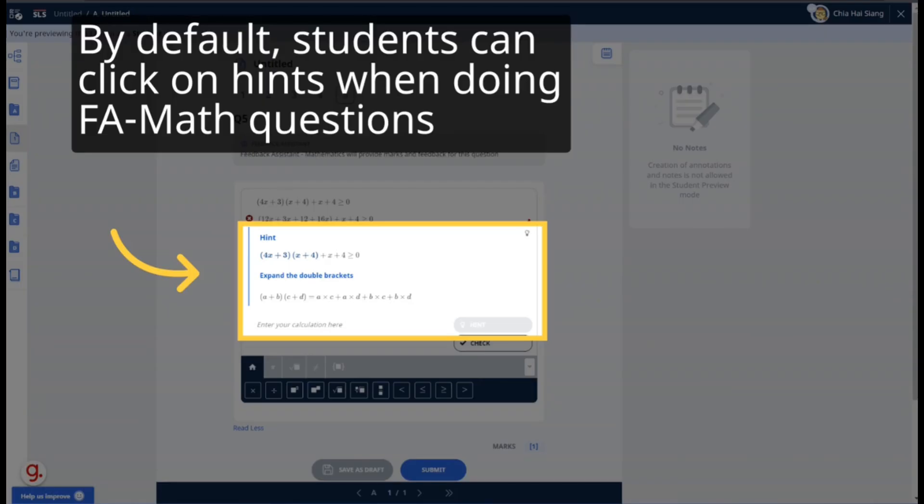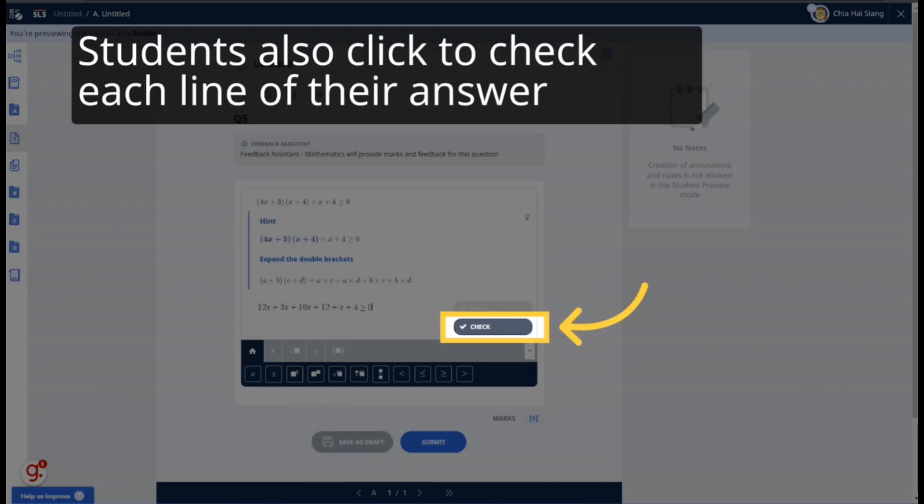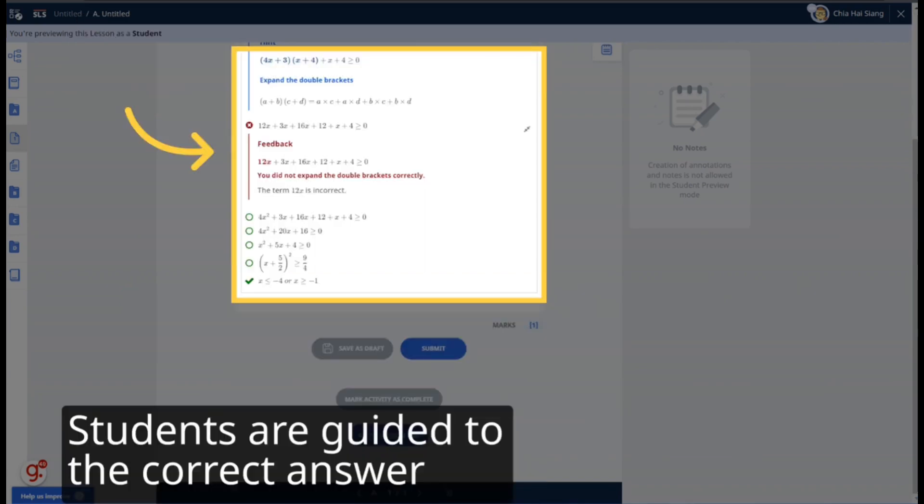The default setting for FA Math questions allows students to click on hints when responding. Students also click to receive line-by-line feedback. Immediate feedback is given for each line, including identifying possible errors that the student might have made. With this approach, students are guided until they reach the correct answer.